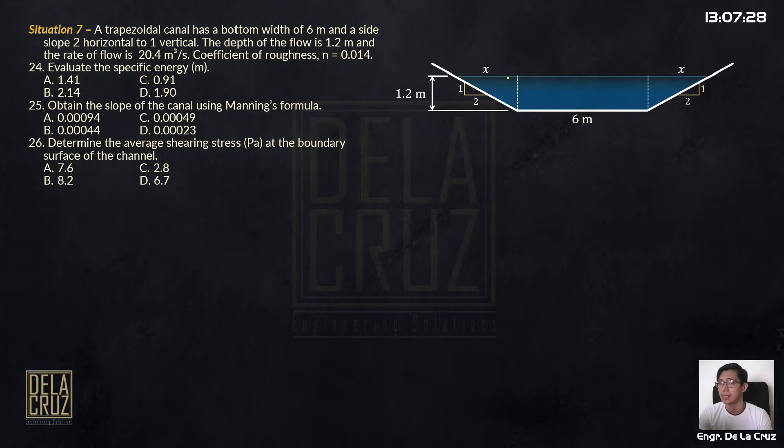I'll call this x and x. They're equal because the same side slope. So if 6 meters here, 6 meters here. So using this side slope, we have here the triangle. By ratio and proportion, we have x is to 2 equal to 1.2 is to 1.